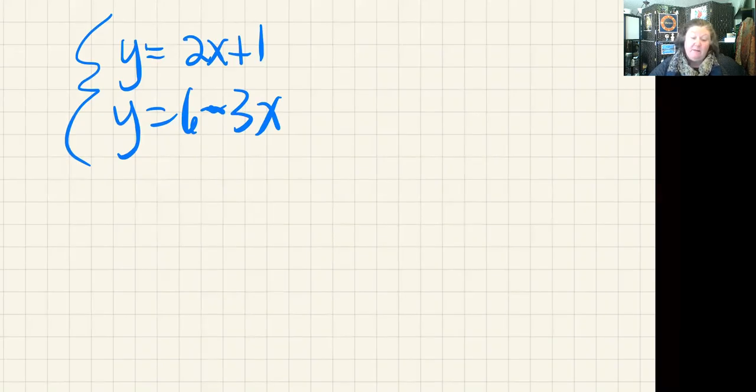When I look at the system, I see this as something I would solve with substitution because both equations are solved for y. Since y equals 2x + 1 in the first equation and the second equation also equals y, that means this can be substituted in for this y so they're both equal to each other.